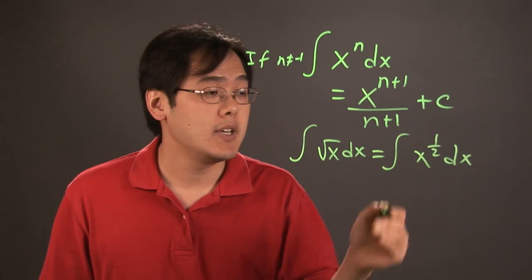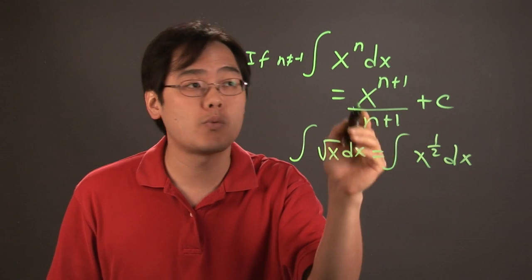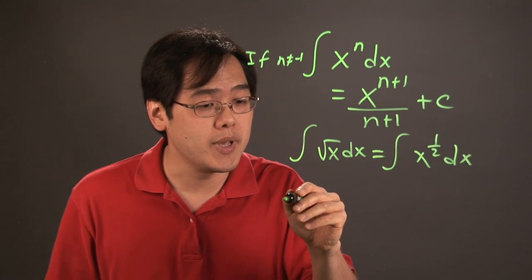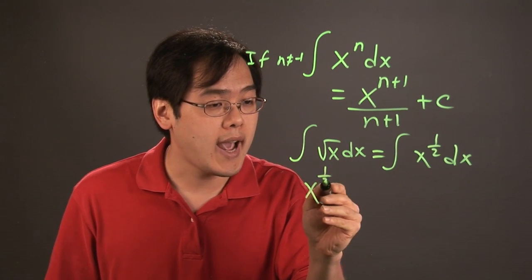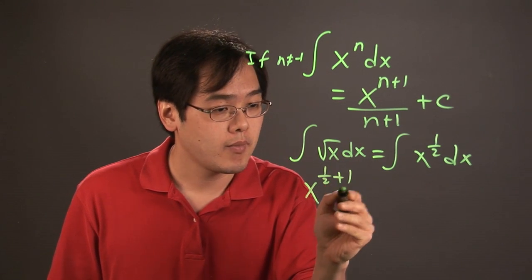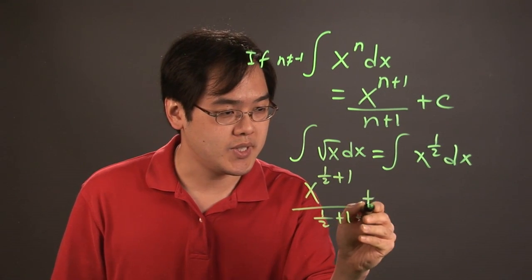And once you have it in exponent form, you want to use the rule that we just talked about. So it would be x to the 1 half plus 1 over 1 half plus 1 plus c.